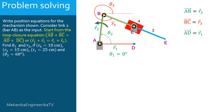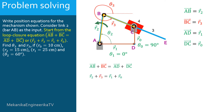Theta 1 here is equal to 0 degrees. The vector DC also connects two static points. Its direction and modulus are both constants and depend on the mechanism's geometry. The vector DC refers to the ground and is denoted as the vector R0. The vector DC has a constant modulus, the distance DC, or R0, and also a constant angle. Theta 0 here is equal to 90 degrees. The loop closure equation writes R2 plus R3 equals R1 plus R0.